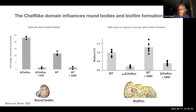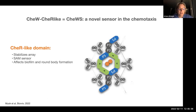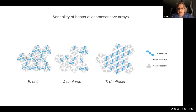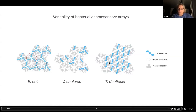In summary for this section: the CheW with a CheR-like domain attached is a novel sensor in chemotaxis that is not dependent on chemoreceptors themselves. It also functions to stabilize the array and affects biofilm and round body formation. There is unexplored variability in chemotaxis arrays with additional functions characteristic to specific species — we've only examined three, but there is much more variability to discover.